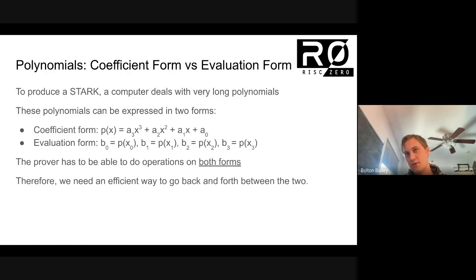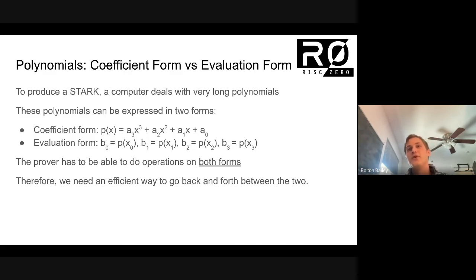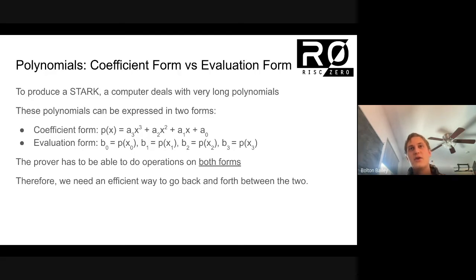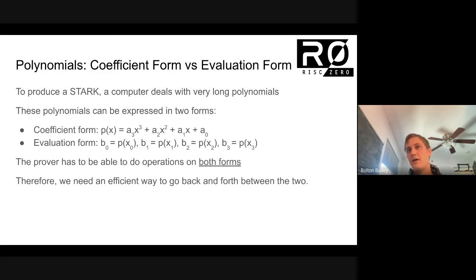If I just give you a single number — a single point at which a particular polynomial is evaluated — that's not enough to tell you the whole polynomial, because there might be many polynomials that pass through that one point. So you actually need quite a bit of information. There's a distinction between doing the computation directly and doing it in the more number theoretic transform way, which is a bit more indirect but actually gives you a lot of data all at once.